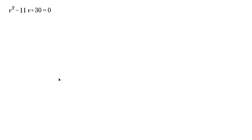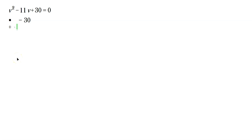v squared minus 11v plus 30 equals 0 — not factored, so you've got to factor it first. You need a number times some other number that equals 30, and that same pair of numbers must add to negative 11. So you've got to look for the factors of 30.